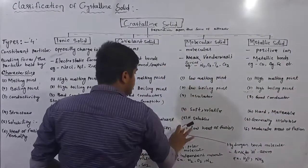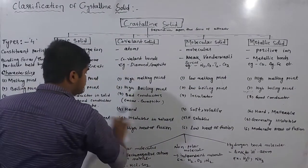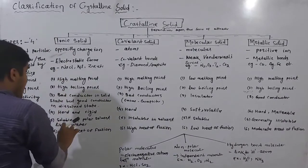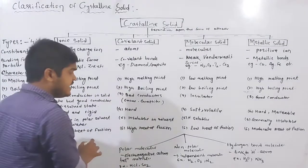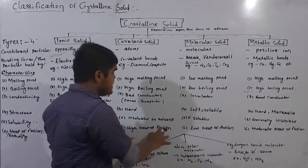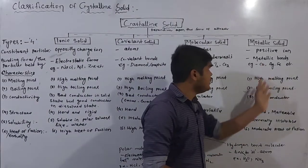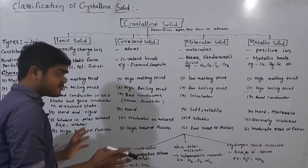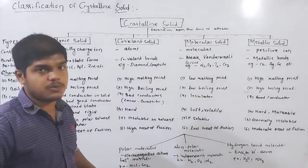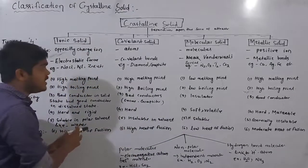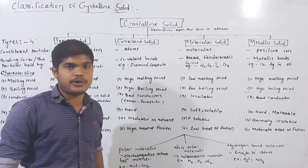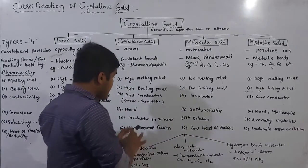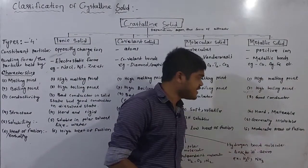The covalent solid is insoluble. Then, heat of fusion: the ionic solid has high heat of fusion, the covalent solid has high heat of fusion, but the molecular solid has low heat of fusion, and the metallic solid has a moderate rate of fusion.